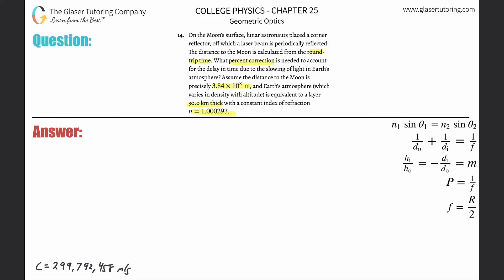Here's the conceptual setup: here's the Earth and here's the Moon, and there's a certain layer around the Earth's atmosphere that is going to be 30 kilometers thick, or 30,000 meters.